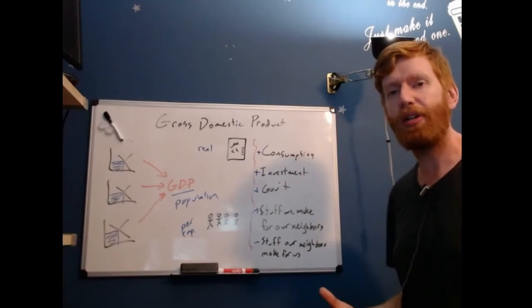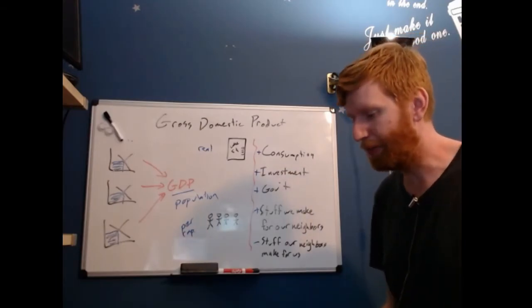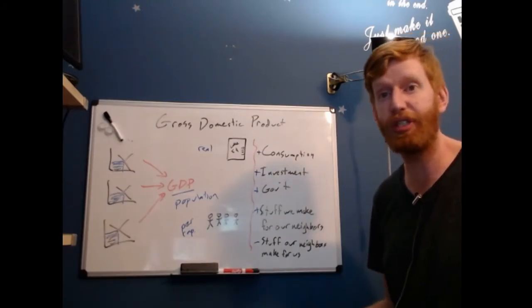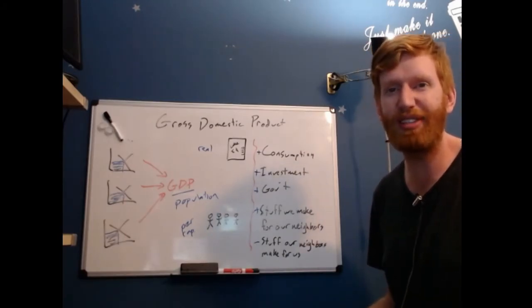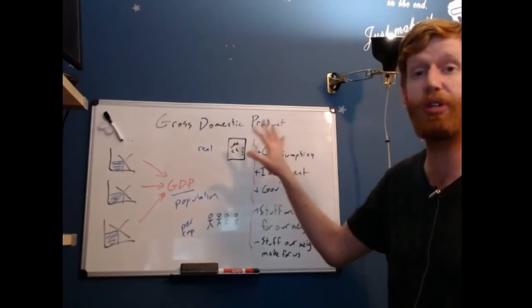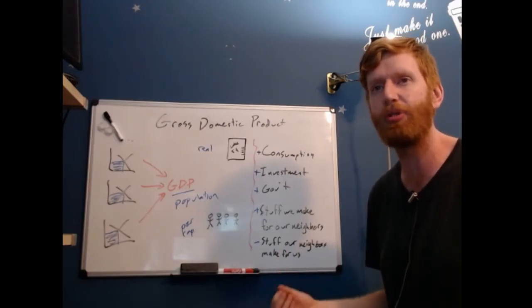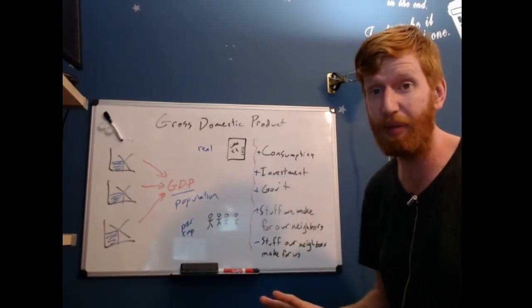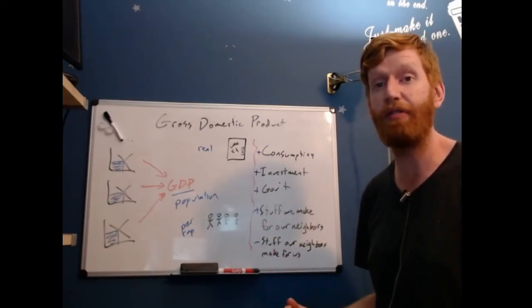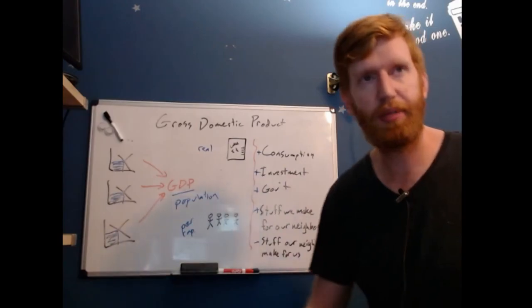We also need to acknowledge what GDP isn't, so we don't misuse this number. There's an idea—I think it's Campbell's law—which says to the extent people take a measure seriously, it becomes a measure that's not really worth taking seriously. GDP kind of falls into that category because we do things to increase GDP without really asking if GDP is doing the full job we hope it is. We hope GDP will tell us if we are wealthy, but it's only capturing one aspect of that—an important aspect, but not the whole thing.